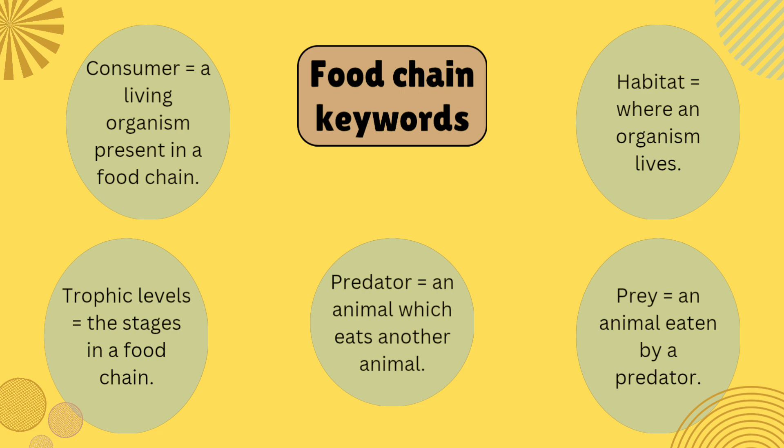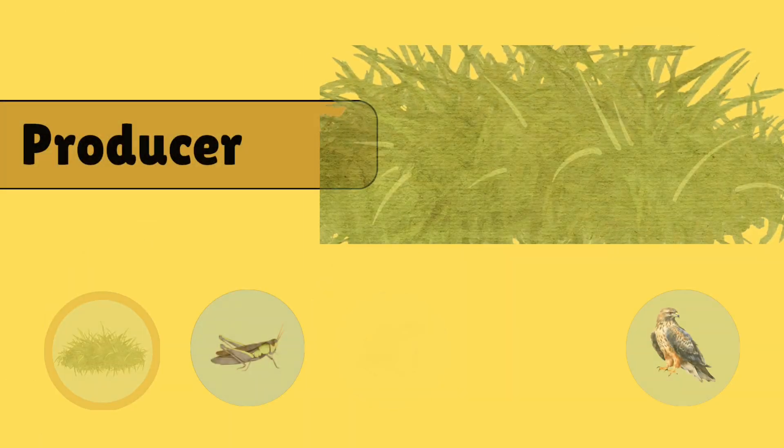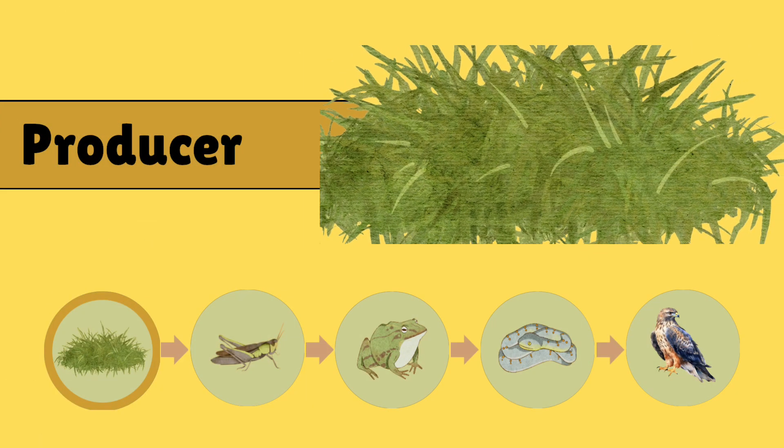Coming to the producer — what it is in a food chain. The food chain begins with the producer. This is usually a green plant or algae which carries out photosynthesis. Grass is a producer in the food chain. In this picture, the producer is grass.